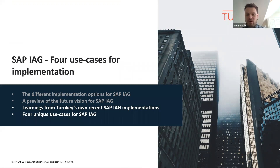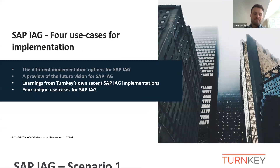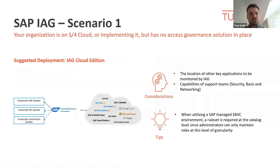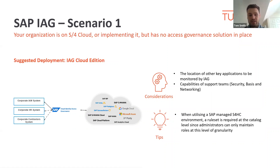It sounds like some interesting developments coming with IAG over the coming months and years. Handing back to Turnkey now, we're going to go through our four unique use cases and the considerations and tips we have with each implementation. Our first scenario is an organisation currently on S4HANA Cloud or implementing it, with no access governance solution in place. Based on what Gabs has said, the best course of action is getting IAG full cloud edition — you can connect your corporate IAM, HR or contracting systems to IAG to support the provisioning process, and use the risk analysis functionality to run SOD analysis on your business roles and users.